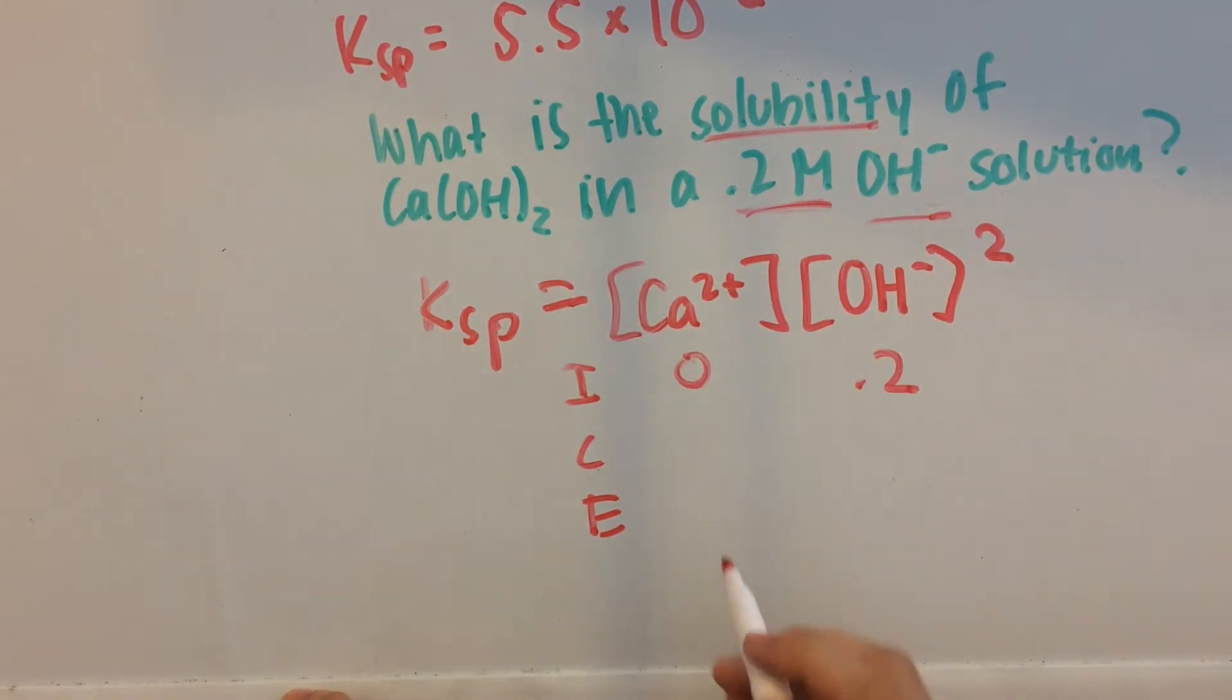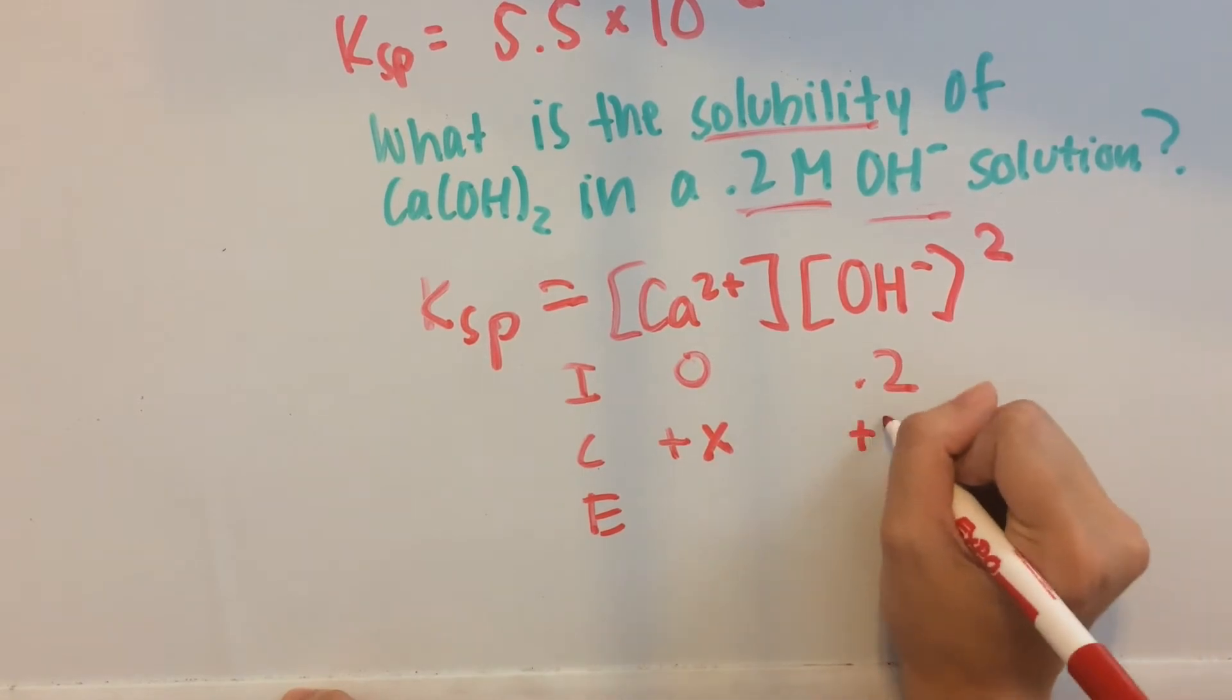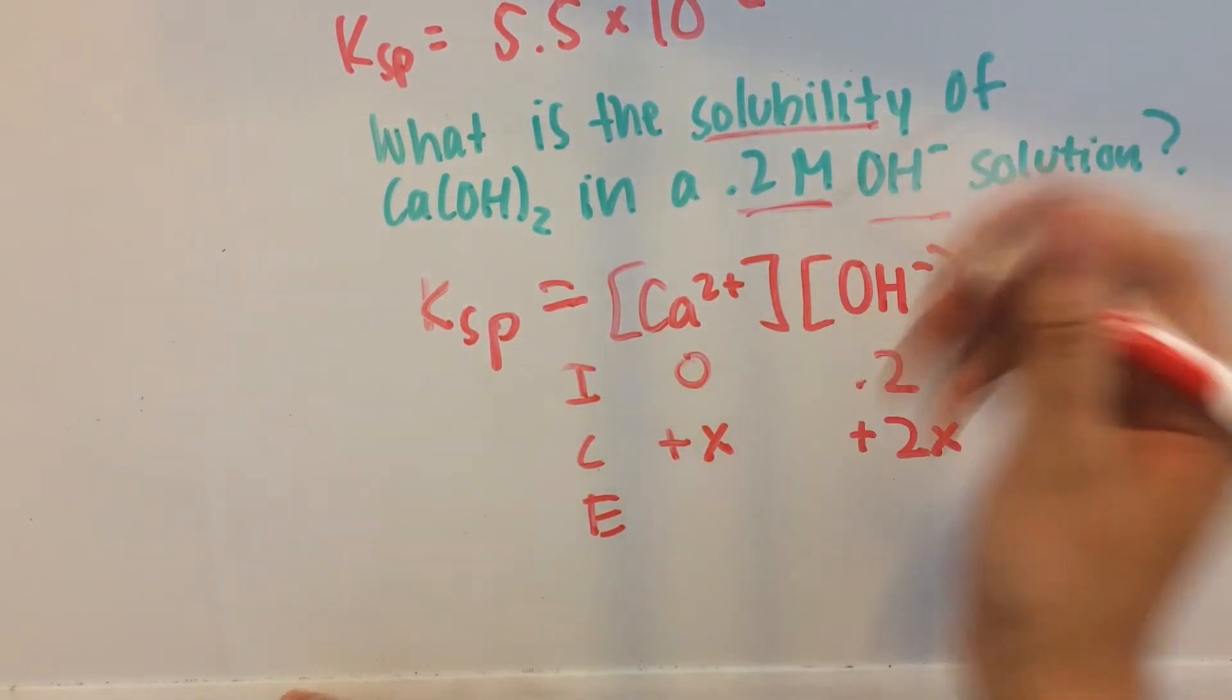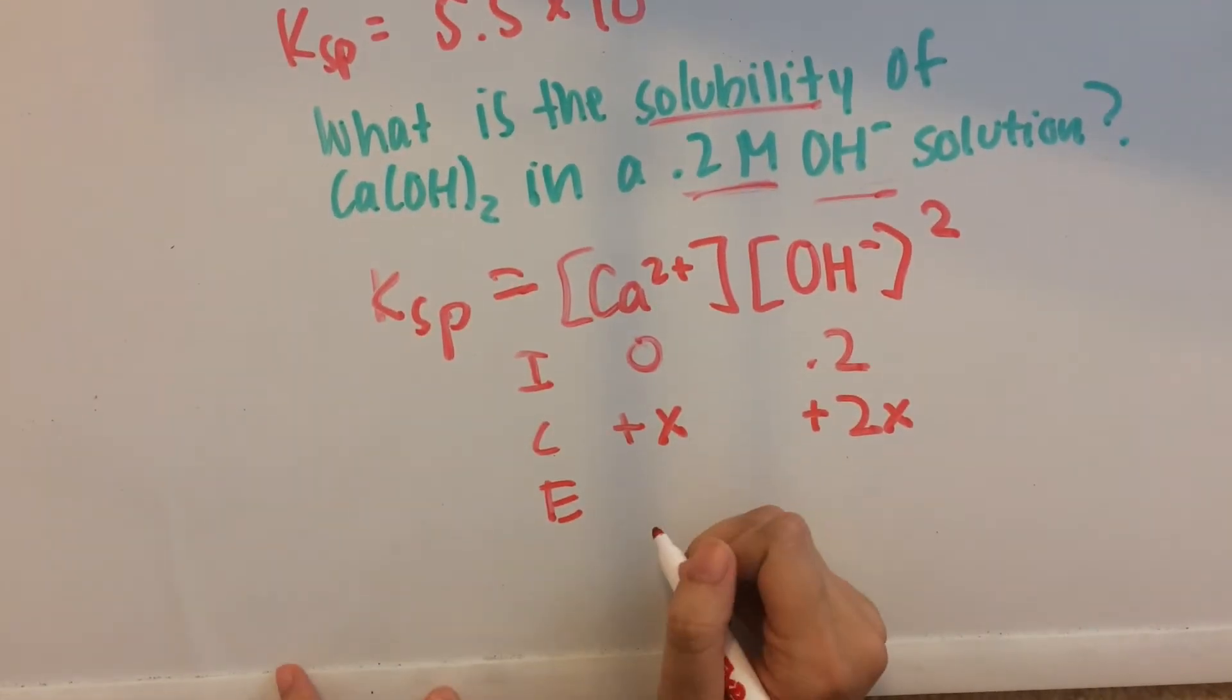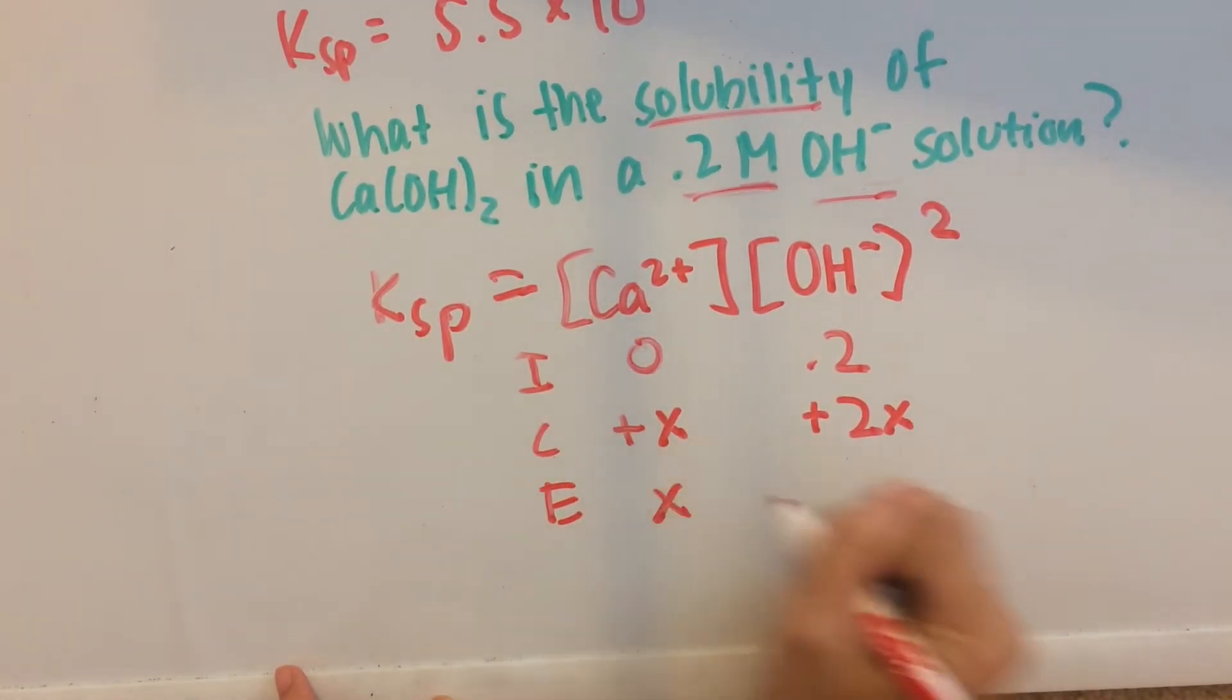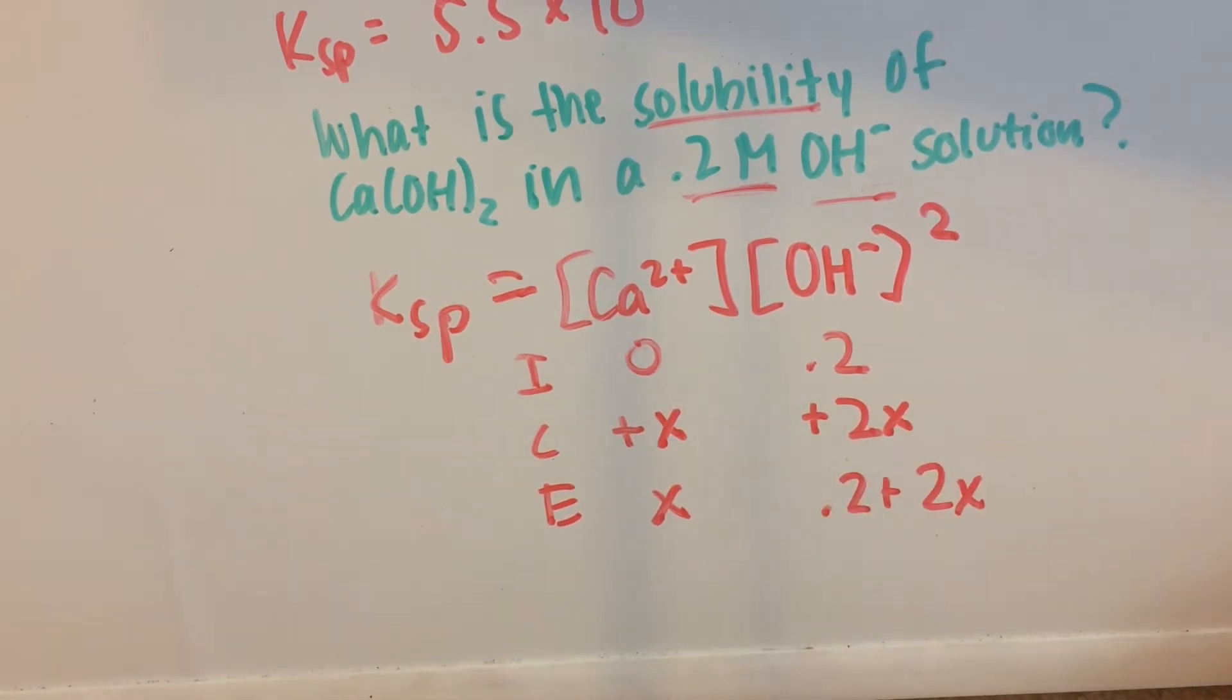Now change is going to be plus x and plus 2x. Remember, don't forget that coefficient. So at equilibrium, we're going to have x and 0.2 plus 2x.